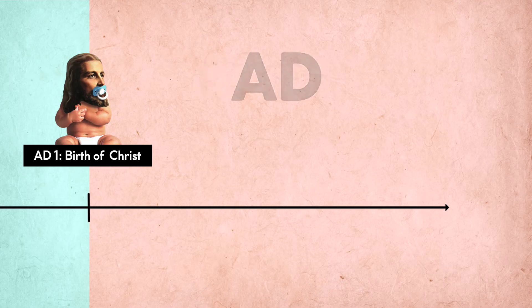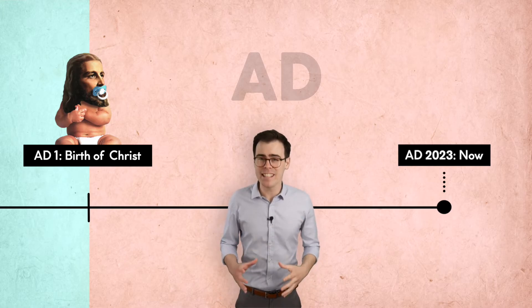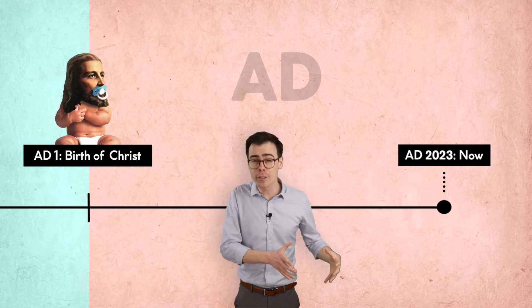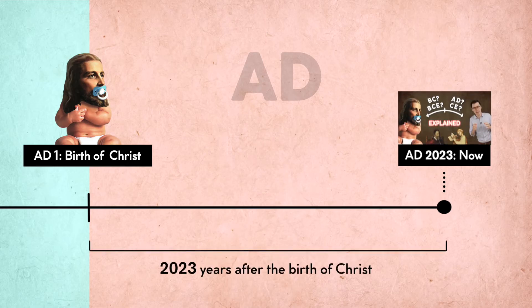AD starts with year one, Christ's birth, and covers all the years between then and now. Every AD date is that amount of years after the birth of Christ. For example, this video was made in AD 2023, which is 2023 years after the birth of Christ.